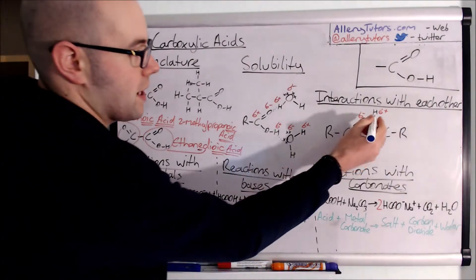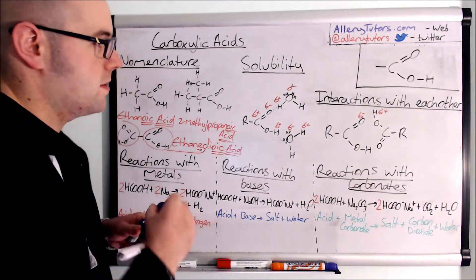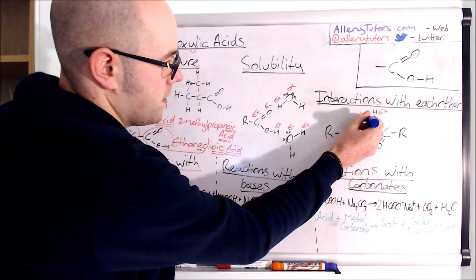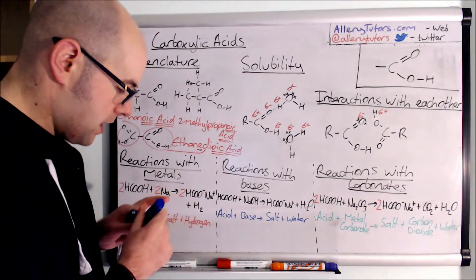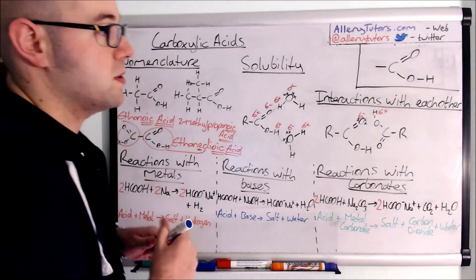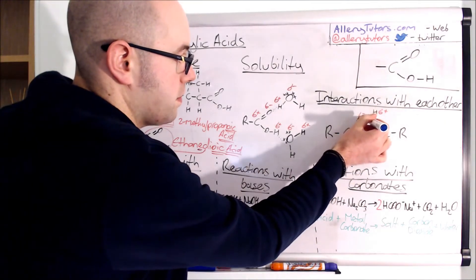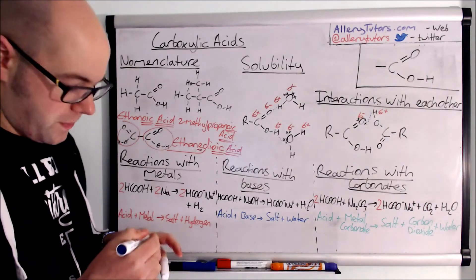Exactly the same as before. You have an interaction between, we'll put our lone pairs on there as well just to be specific. There you go. There's two lone pairs on the oxygen. One, two. And the hydrogen bond is between the lone pair on the oxygen and the delta positive on the hydrogen.